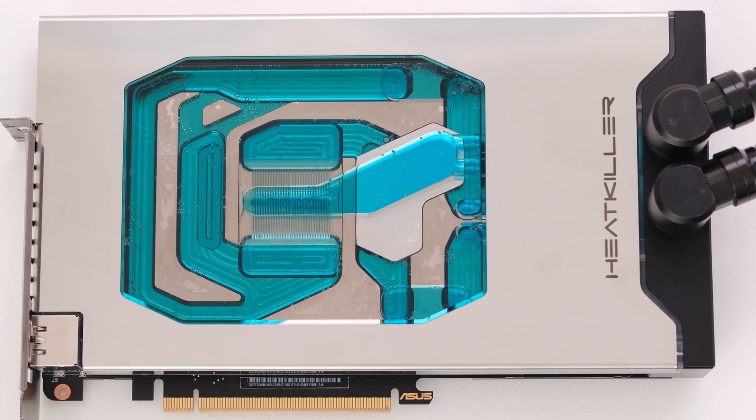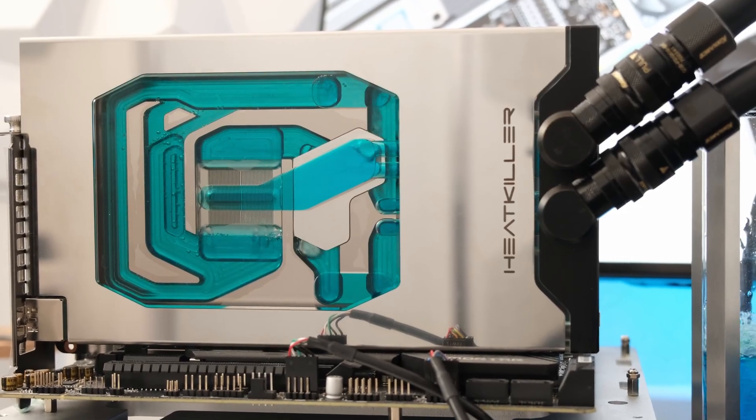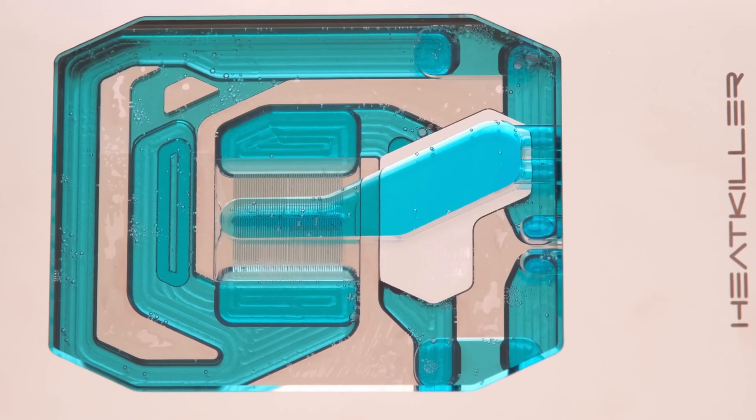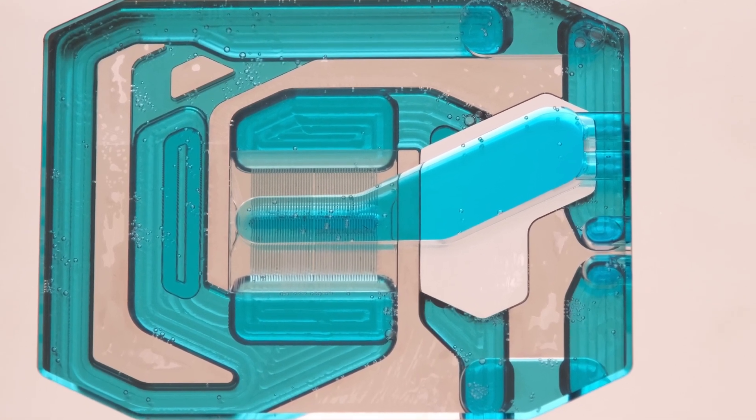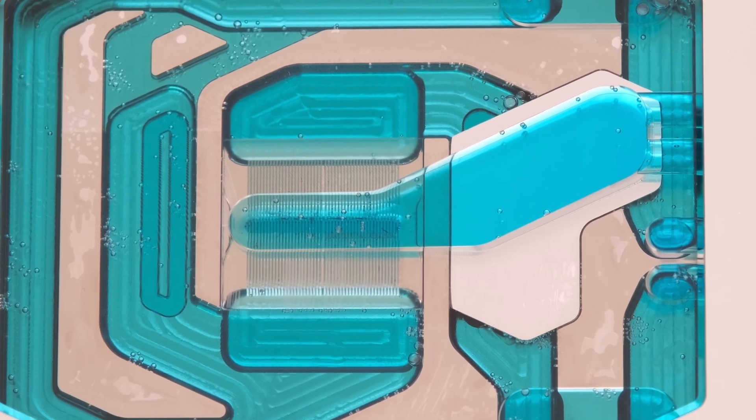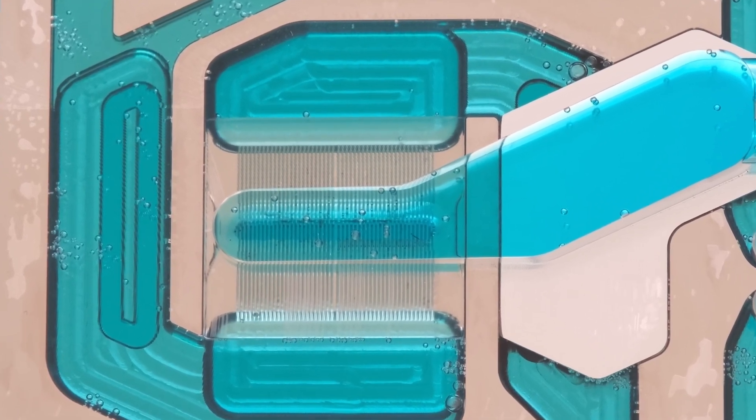We will then install the card in our test system, fill the custom loop, and perform testing to obtain thermal, power, and performance results. We will also lower and raise the power limit and undervolt and overclock the card. This is the Vector Network and let's begin.